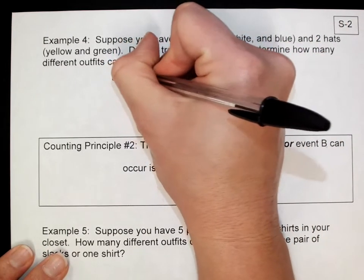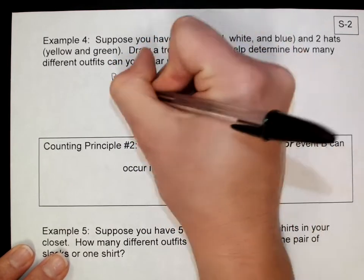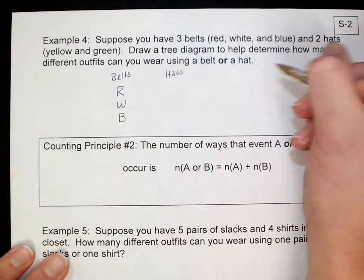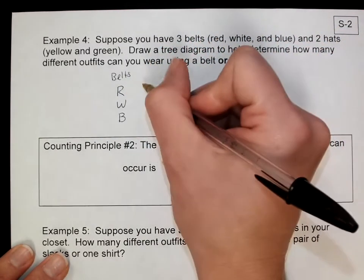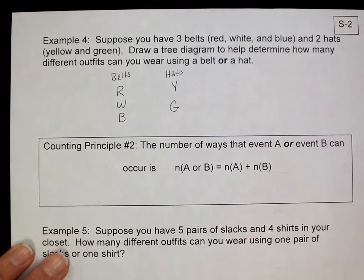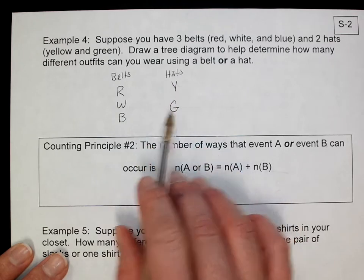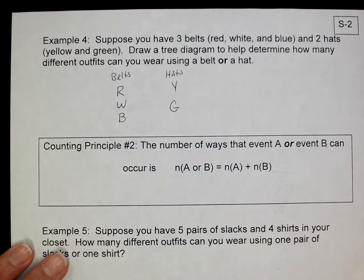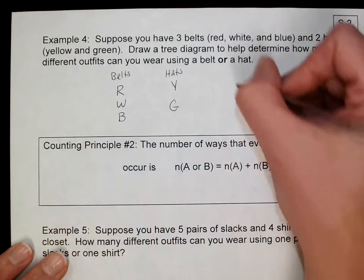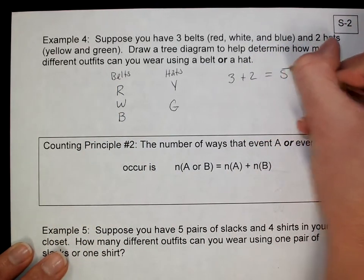Here's our belts. Here's our hats. I could wear the red belt, the white belt, the blue belt, or I could wear the yellow hat or the green hat. How many different possibilities are there? There are these three, and there are these two, and that's it. Because we're just talking about wearing a belt or a hat, it doesn't say anything about wearing both. So how many different possibilities do I have? I have three for belts plus two for hats equals five different possibilities.